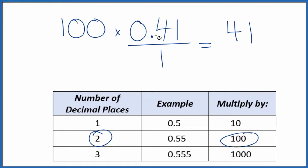But we can't just multiply the numerator here by 100. We also have to multiply the denominator. That's because 100 divided by 100, that's equal to 1. So we're multiplying by 1. Again, we don't change the value, just the way it's written.